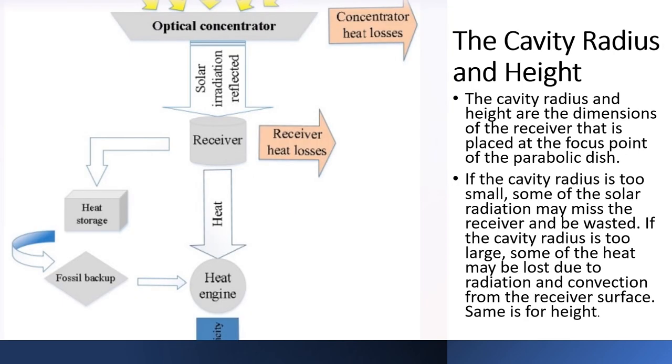Next is the cavity radius and height. The cavity radius and height are the dimensions of the receiver that is placed at the focus point of the parabolic dish. If the cavity radius is too small, some of the solar radiation may miss the receiver and be wasted. If the cavity radius is too large, some of the heat may be lost due to radiation and convection from the receiver surface. The same is true for height.